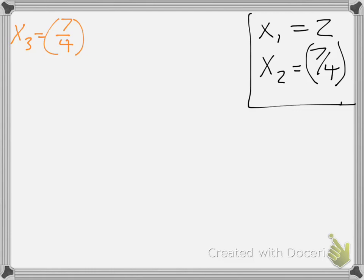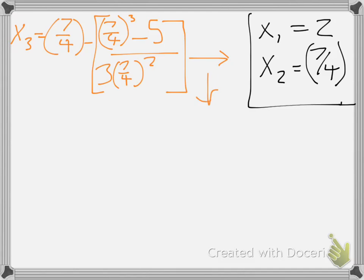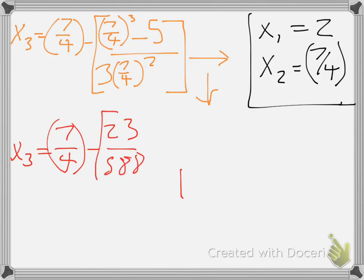Alright, 7 fourths minus 7 fourths cubed minus 5 over 3 times 7 fourths squared. And this is going to give us that x_3 equals 7 fourths minus 23 over 588. That's pretty ugly, eh? So 7 fourths minus 23 over 588.